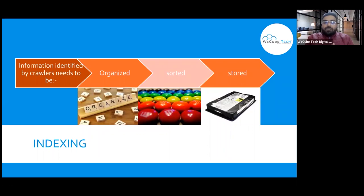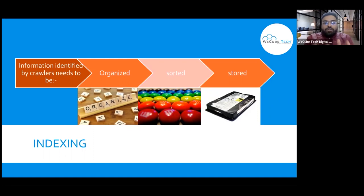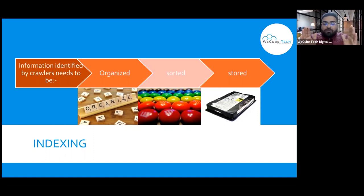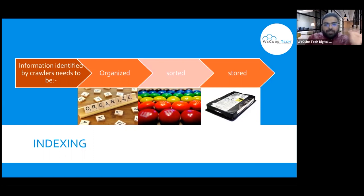Next, we will talk about indexing. When the search engine has so much information crawled, what will it do? It is simple — it has so much information, so it will organize it, sort it, and then store it, so it can deliver results within milliseconds. Google's index stores hundreds of billions of websites. Before indexing, it organizes them — movies-related websites go one place, studies-related websites go another place.